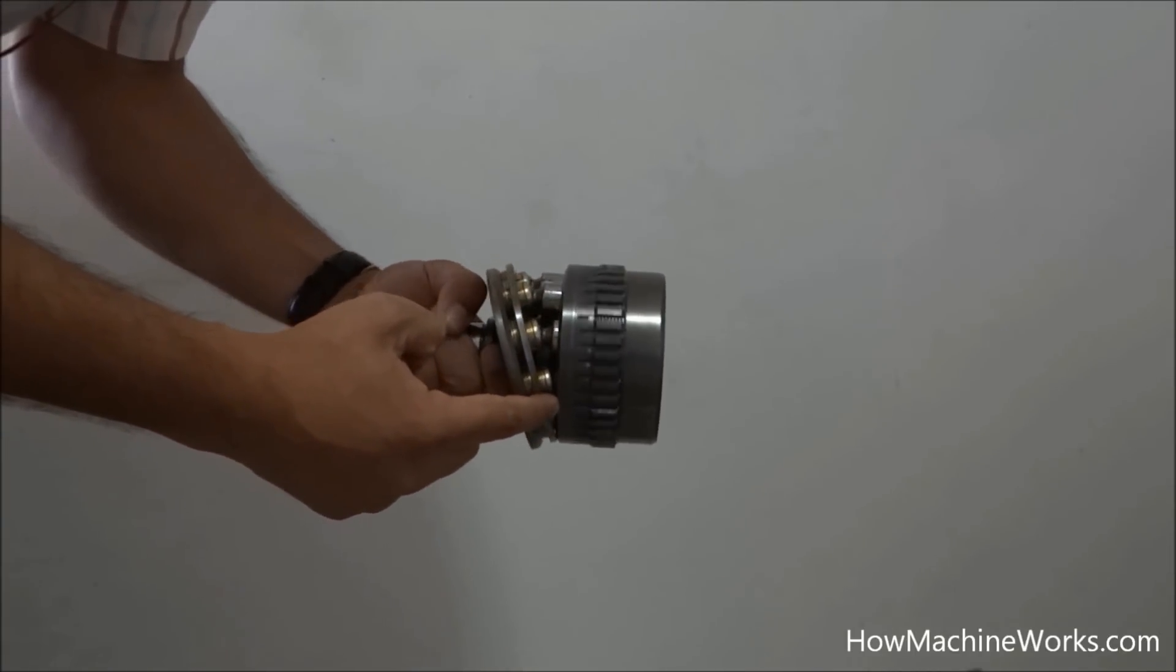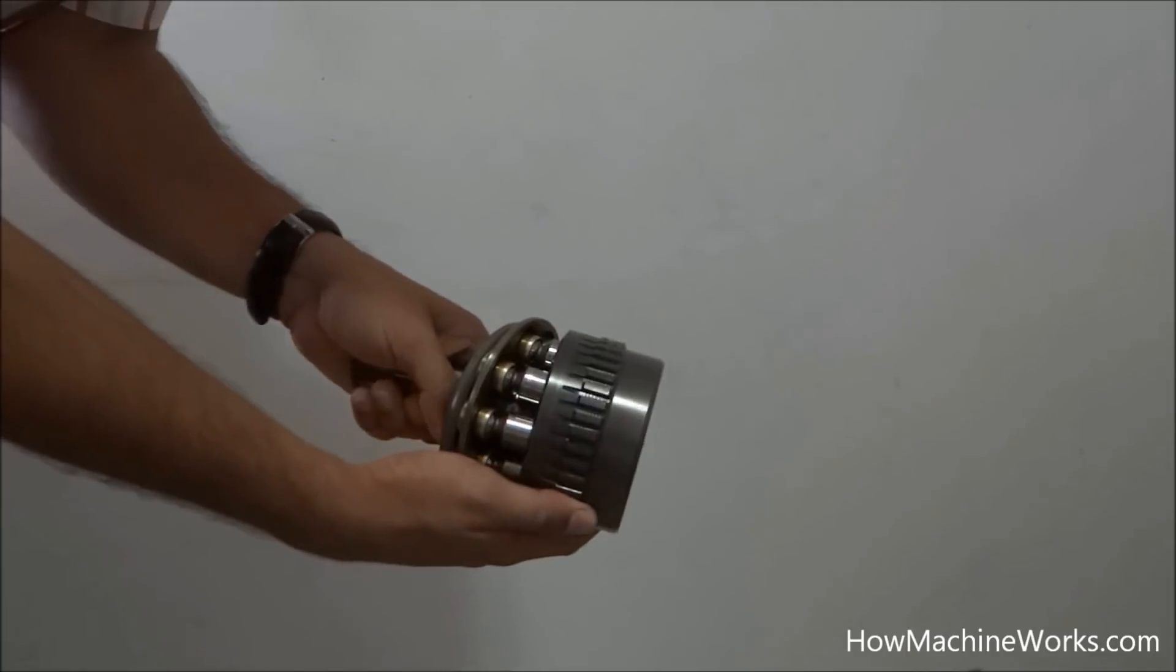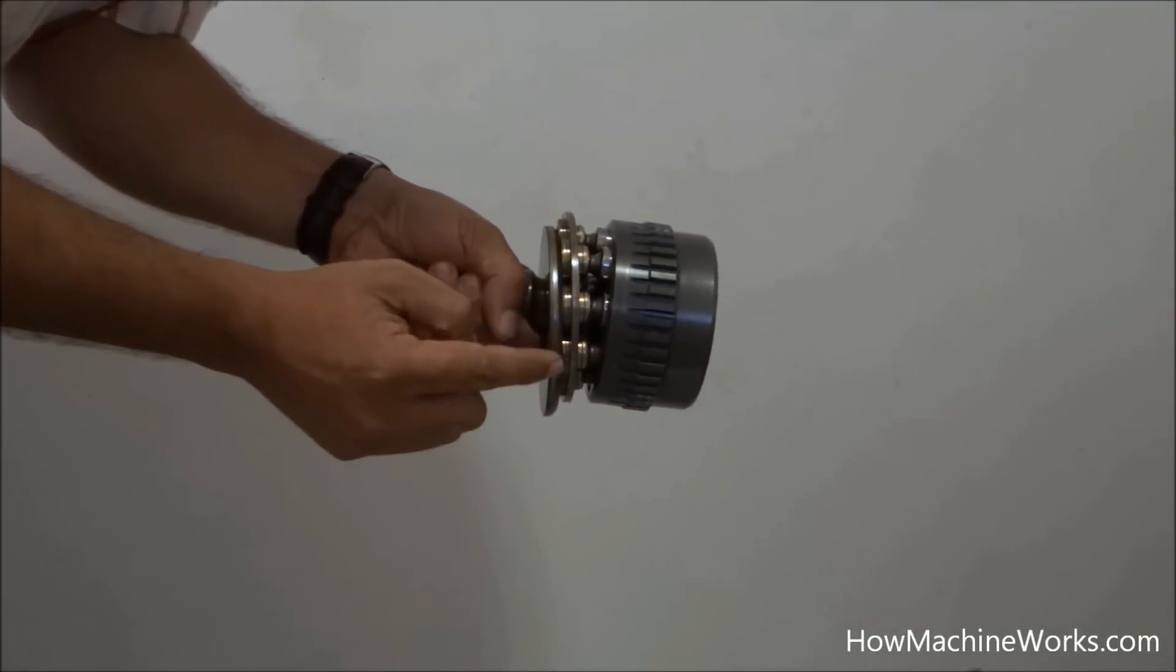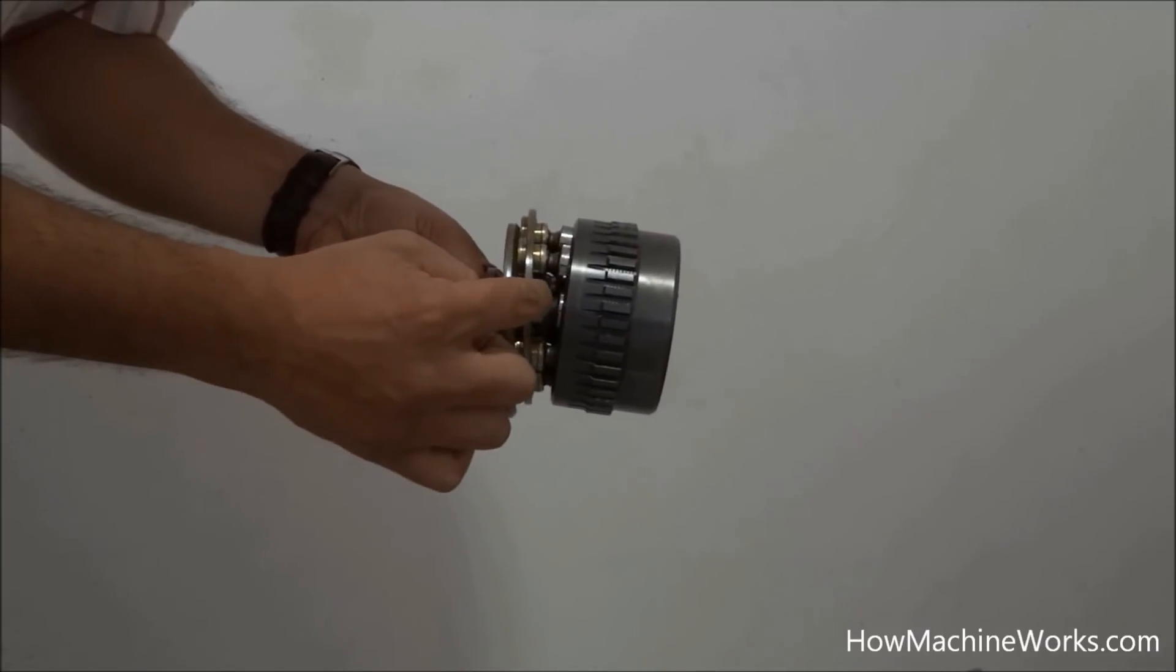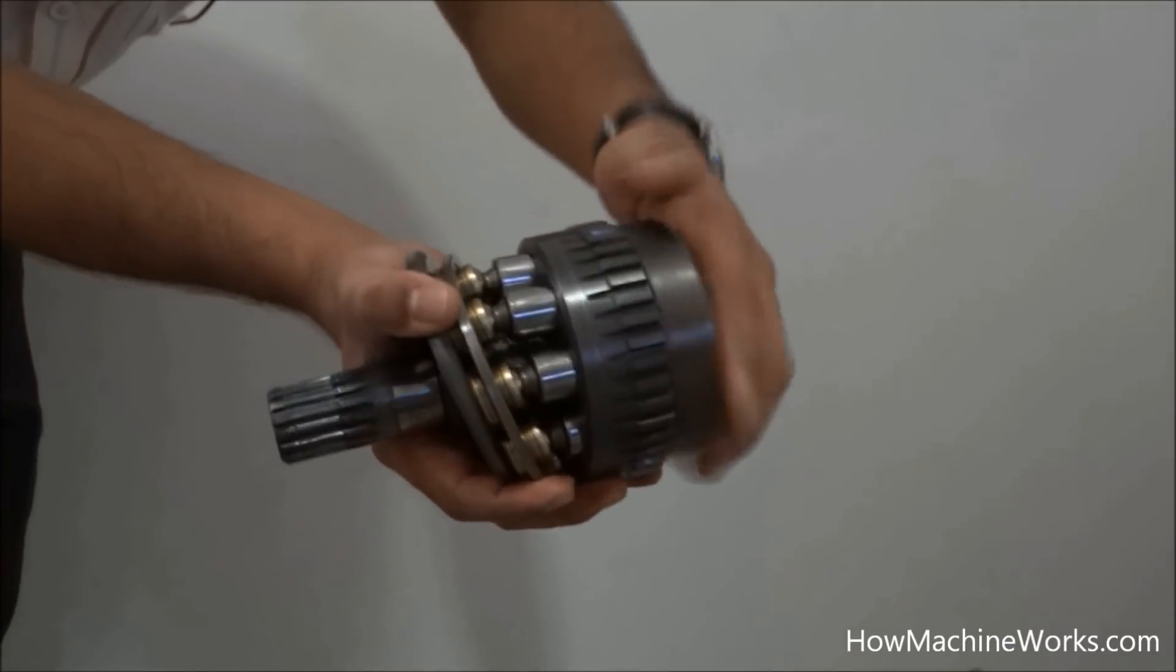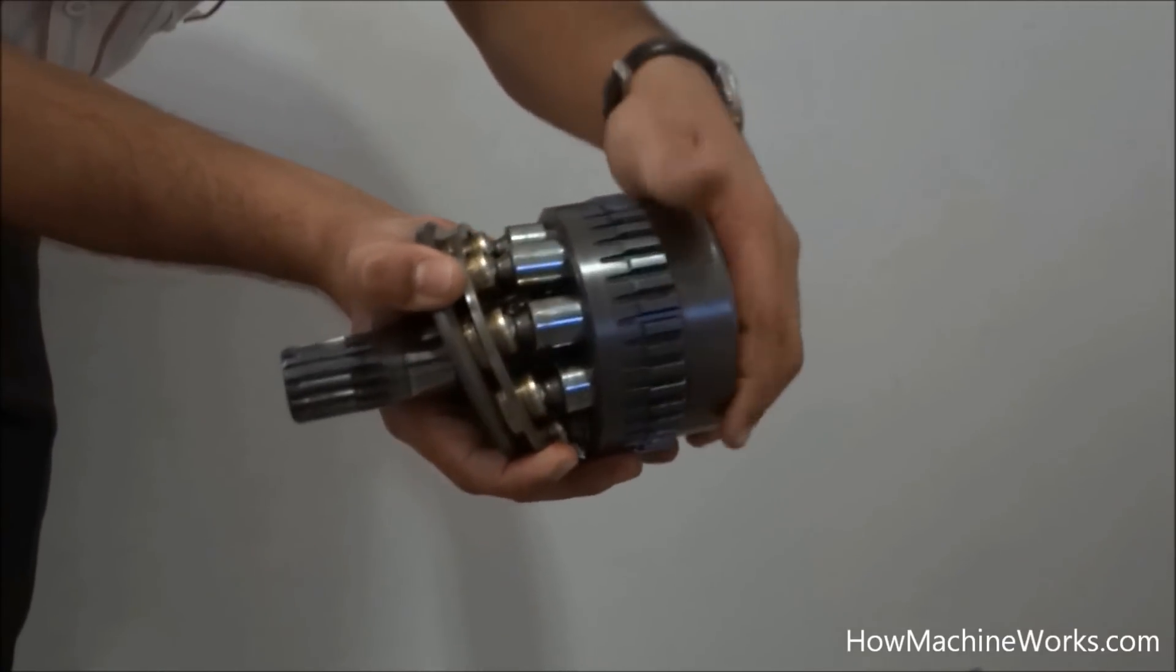So those are the pistons arranged over there. See the pistons actually protruding outside the cylinder block. And that's a swash plate over there where the pistons actually slide. So this is a variable type pump. That means the flow can be varied, normally used in tracked excavator machines.